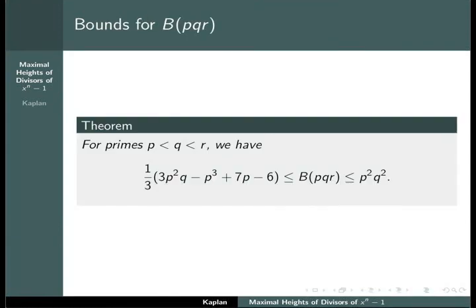The main theorem of the rest of the paper is to give an upper and lower bound for b of p times q times r. We can show that 1 third of 3p squared q minus p cubed plus 7p minus 6 is less than or equal to b of pqr, which is less than or equal to p squared times q squared.